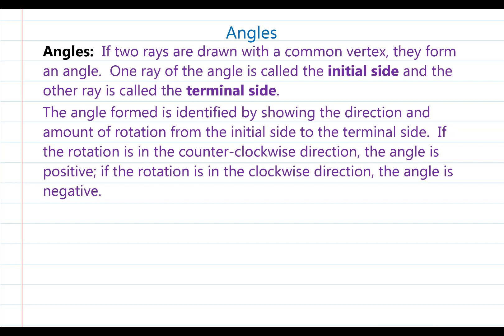If two rays are drawn with a common vertex, they form an angle. One ray of the angle is called the initial side, and the other ray is called the terminal side. I'm going to start by making my common vertex, and I'm going to make my initial side horizontal for this first angle. I'm then going to draw my terminal side diagonal, and I'm going to show the angle, identifying it by showing the direction and amount of rotation from the initial side to the terminal side.